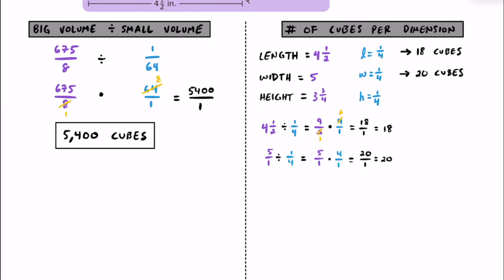Finally for the height, we have 3 and three fourths inches. We're going to see how many quarter inch cubes we can stack on top of each other. 3 and three fourths as an improper fraction is 15 fourths, and we multiply by the reciprocal of one quarter, which is 4 over 1. The 4s cross cancel — dividing both by 4 — giving us 1 and 1, and 15 times 1 is 15. So we get 15 cubes can stack on top of each other all the way to the top of this prism.